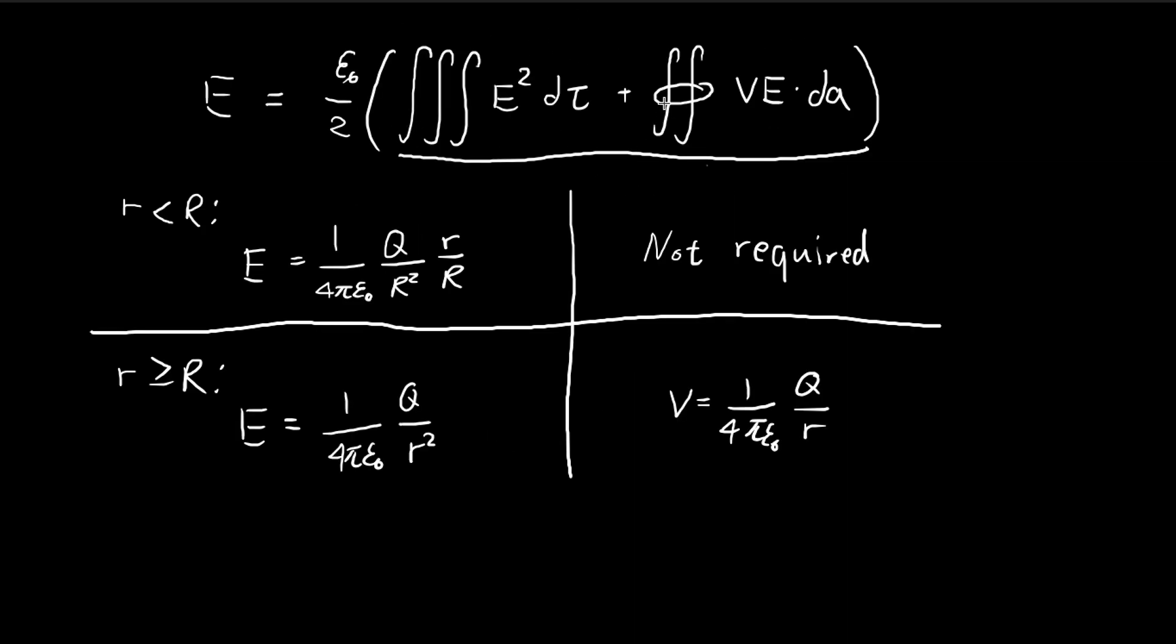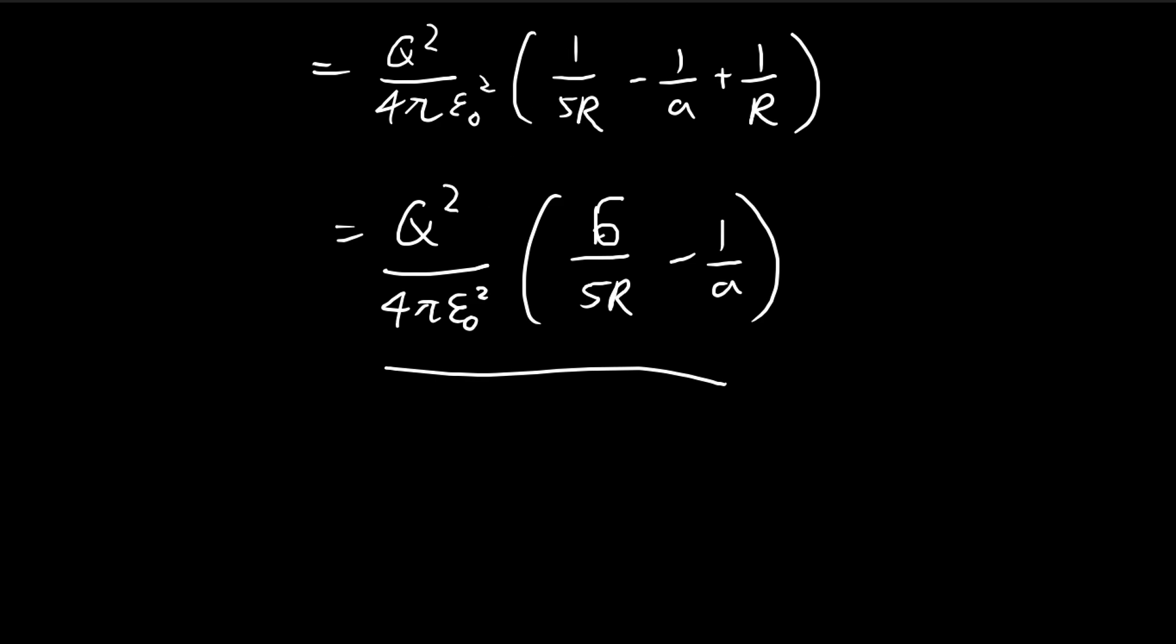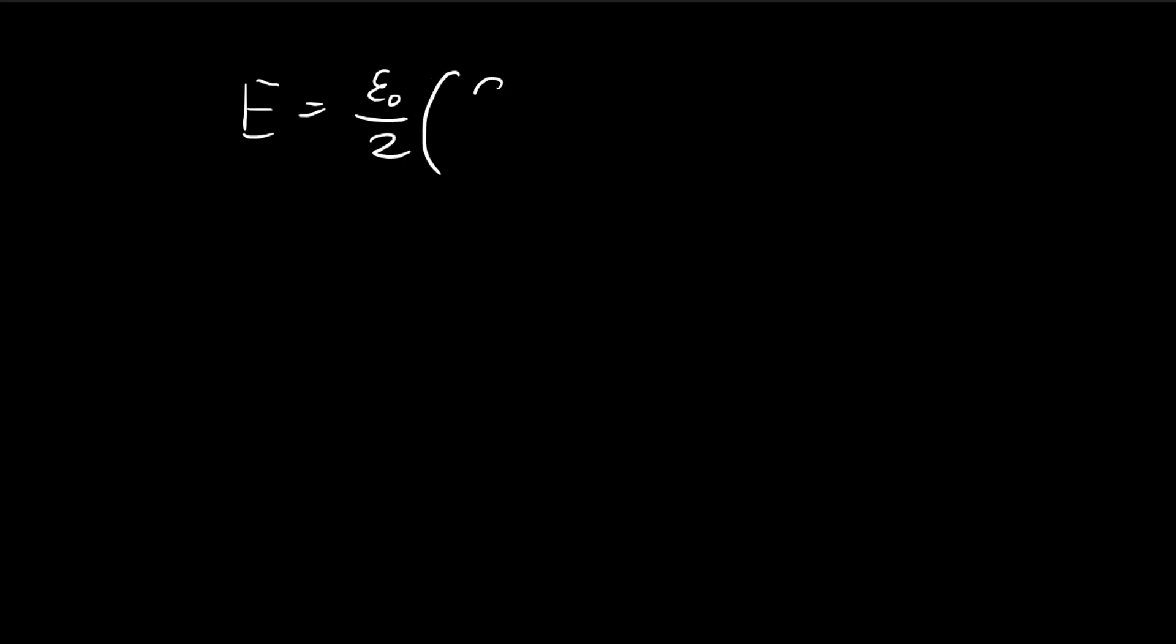And so now we need to go back to this formula. We've evaluated these two integrals. We're going to add these up and then multiply by epsilon divided by 2. So the energy is equal to epsilon over 2 multiplied by this result. This is the volume integral. So q squared over 4 pi epsilon squared, 6 over 5r minus 1 over a, plus the surface integral. So q squared over 4 pi epsilon squared times 1 over a. And I think you see where this is going.